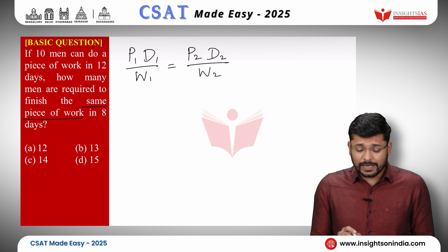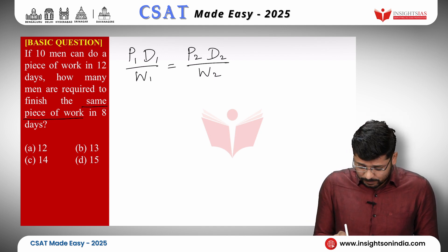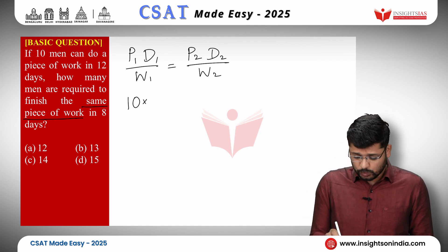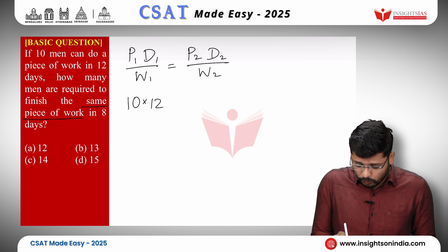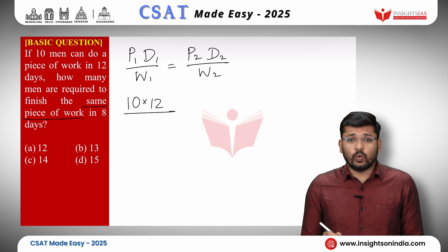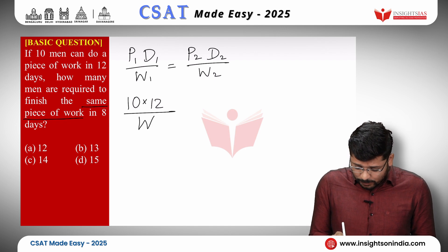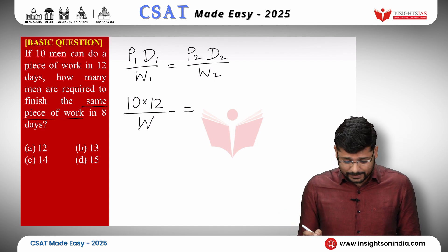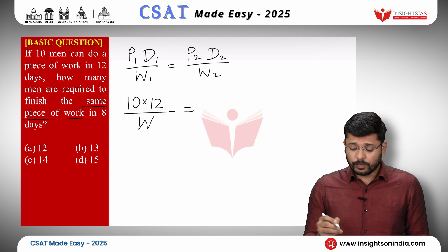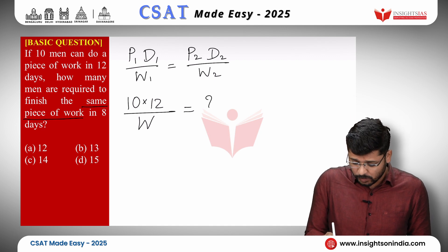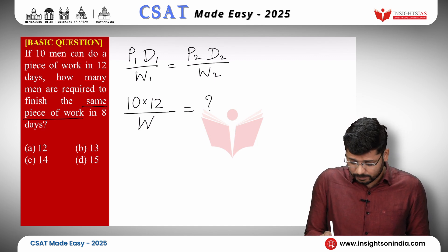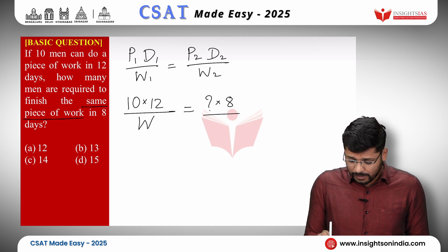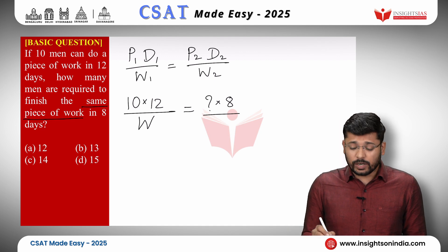In the first case, 10 men are there, so P1 is 10. D1, number of days, is 12. We will keep W1 as W. On the right-hand side, how many men are required — we do not know P2, so we will take it as question mark. In how many days is the work completed? 8 days, so D2 is 8. W2 is the same work, so we will just write W.